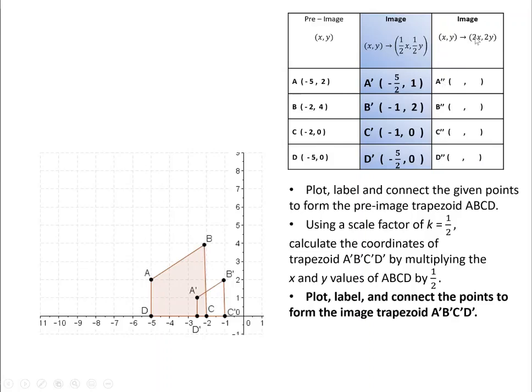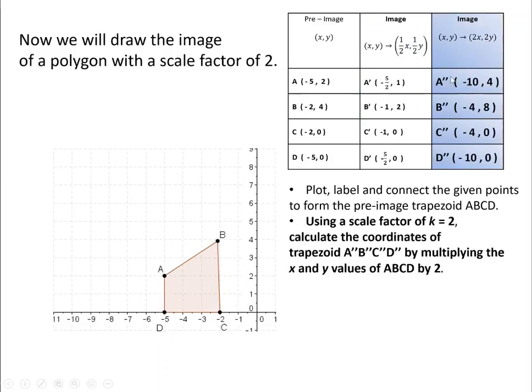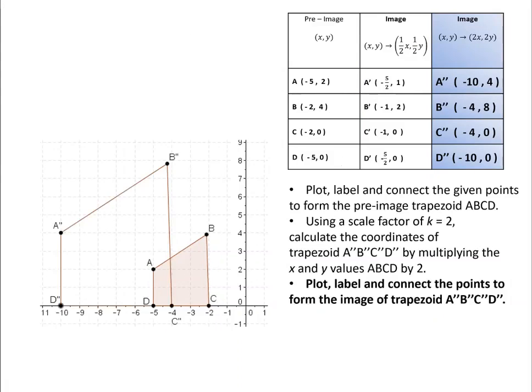And then do that for A double prime, B double prime, C double prime, and D double prime. How is this shape changing? Well, they're doubling it. You're going to take your original one and double your x, double your y. So twice of negative 5 is positive 10, twice of 2 is 4, and you're just going to double these and graph it. And what would you expect the shape to look like? Right, it's double the size. Go ahead and complete that.